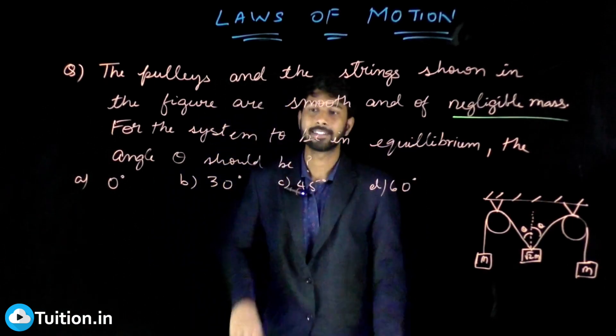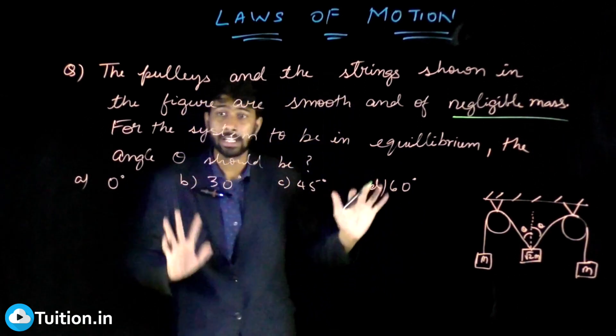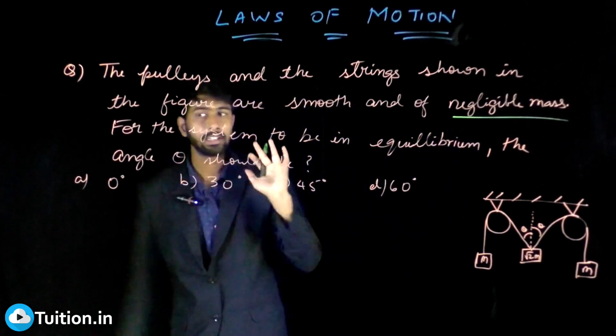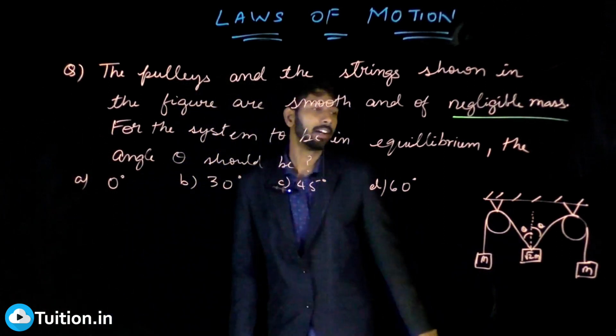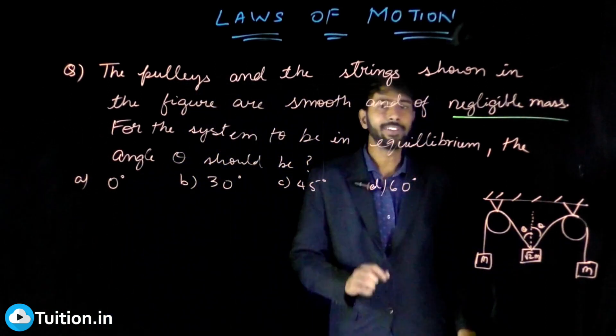If the system has to be at rest or in equilibrium, then the angle theta should be—only for a particular angle theta this will happen. In fact, even if you neglect air resistance and under gravity if you just disturb it and leave it, after some time everything will balance and it will come down to the stable equilibrium position.